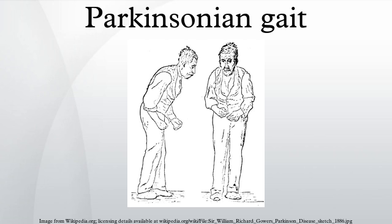Parkinsonian gait is the type of gait exhibited by patients suffering from Parkinson's disease. This disorder is caused by a deficiency of dopamine in the basal ganglia circuit, leading to motor deficits. Gait is one of the most affected motor characteristics of this disorder, although symptoms of Parkinson's disease are varied.